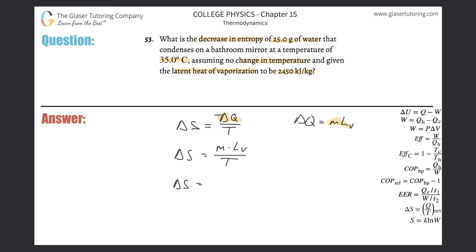They gave us 25 grams of water, but the latent heat is in kilograms, so we need to convert grams to kilograms. Take the 25 and divide it by 1000.